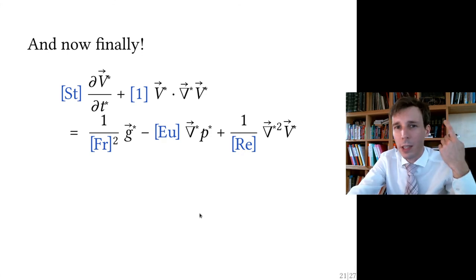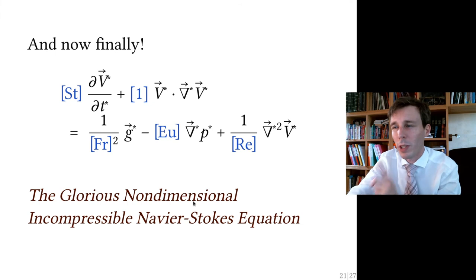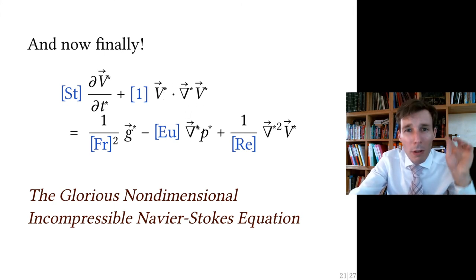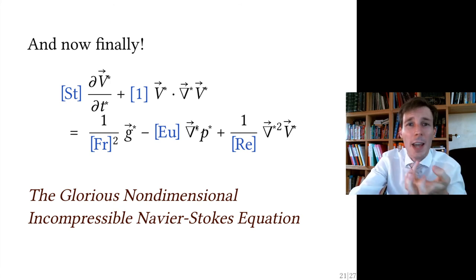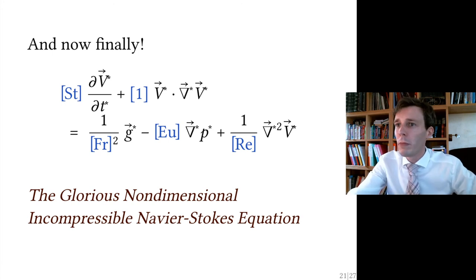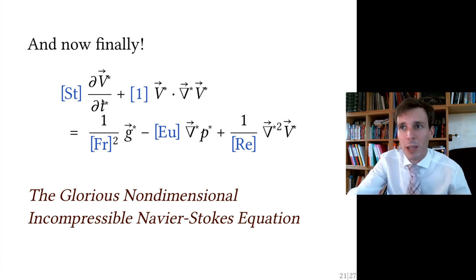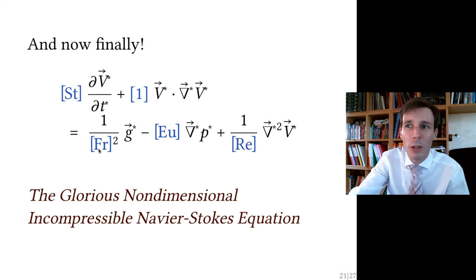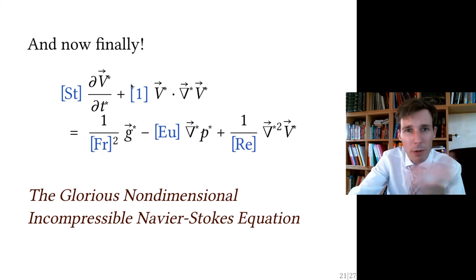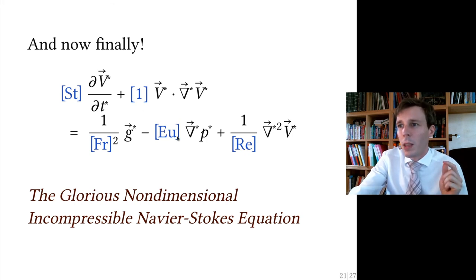Inserting those into the Navier-Stokes equation gives the non-dimensional incompressible Navier-Stokes equation. The starred vectors all have length one, and in front of them are scalar numbers representing the local vector magnitudes. You have the Strouhal number, one over the Froude number squared, minus the Euler number, and one over the Reynolds number — all compared to a reference value of one, which is sometimes not even written explicitly.